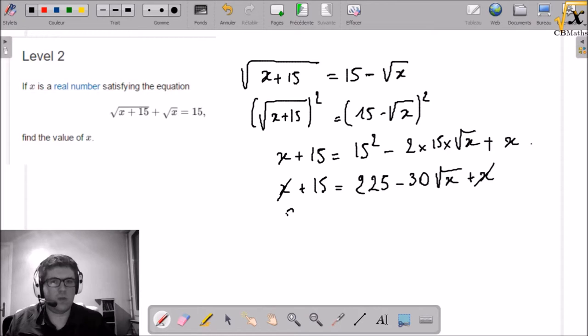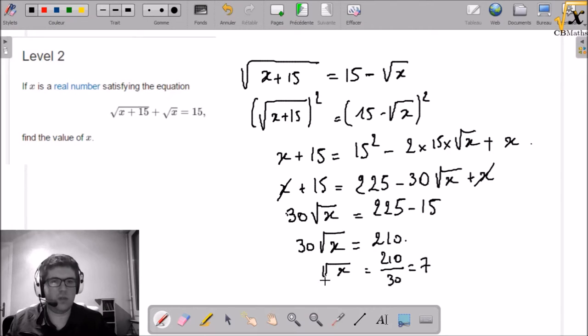So 30 times square root of x equals 225 minus 15. 30 times square root of x equals 210. Square root of x equals 210 over 30 equals 7.